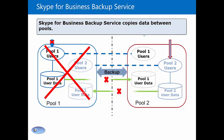At this point, the backup is terminated because we no longer have an opportunity to actually replicate data, and my Pool 1 users are now going to attempt to sign in to Pool 2. But because we haven't actually invoked any type of failover yet, their data, even though it exists there, it's not active yet. So the users will be signed in in reduced functionality mode.